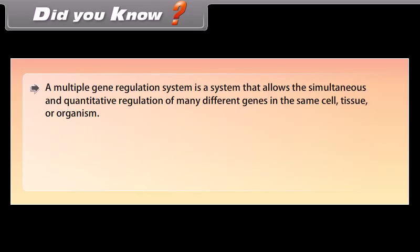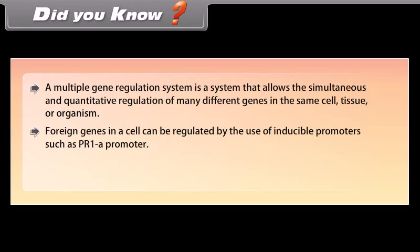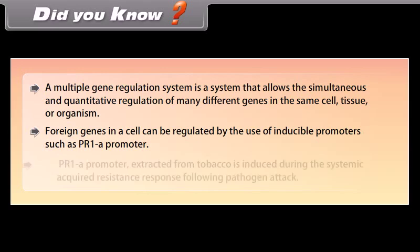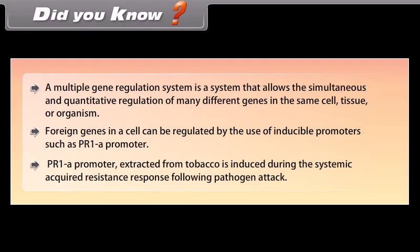Did you know? A multiple gene regulation system is a system that allows the simultaneous and quantitative regulation of many different genes in the same cell, tissue, or organism. Foreign genes in a cell can be regulated by the use of inducible promoters such as the PR1A promoter. The PR1A promoter extracted from tobacco is induced during the systemic acquired resistance response following pathogen attack.